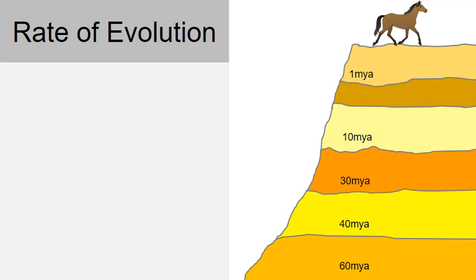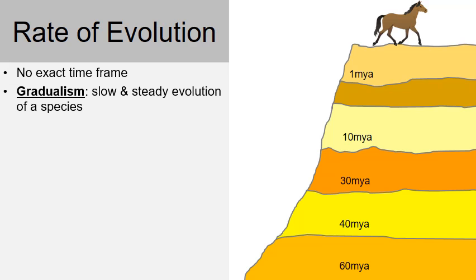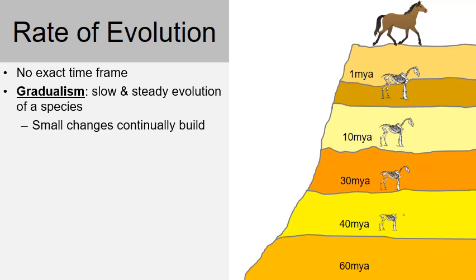Let's finish up on the rate of evolution — how fast does evolution occur? There is no exact time frame, but there are a couple of patterns. The first and most common is gradualism: slow and steady change of one species over time. Looking at horse fossils, when we compare horses from millions of years ago to horses today, they're just incredibly smaller. A 60-million-year-old horse placed next to a modern horse shows quite the size difference. Horses have gradually evolved over the years through slow and steady, step-by-step intermediate changes — a great example of gradualism.